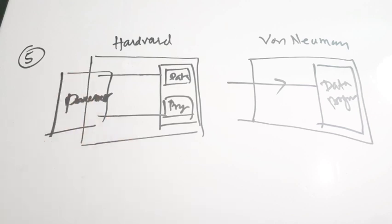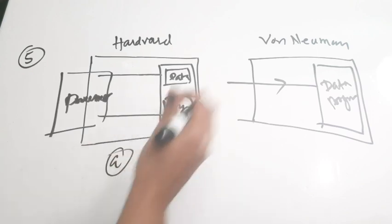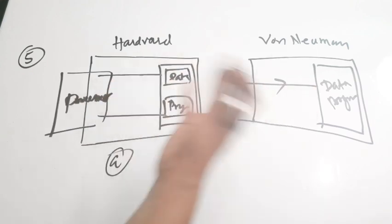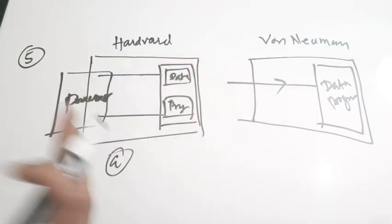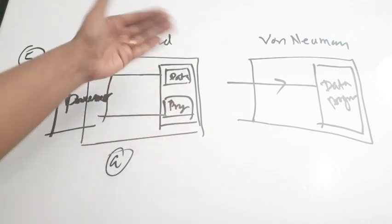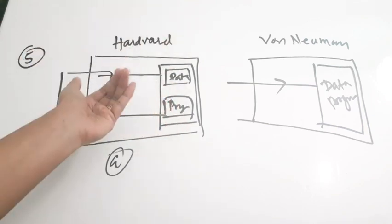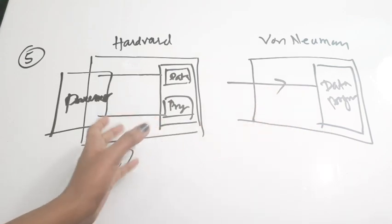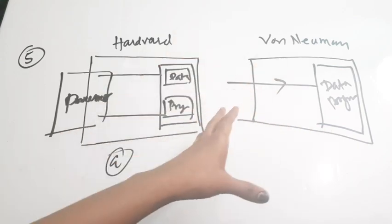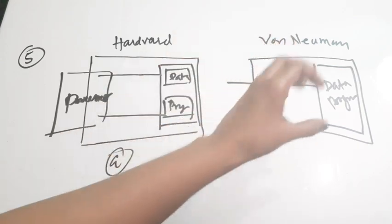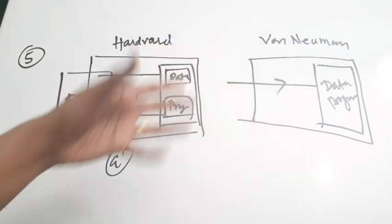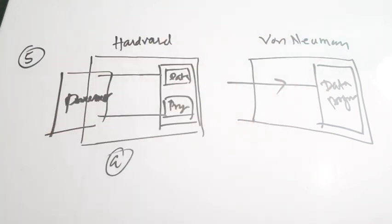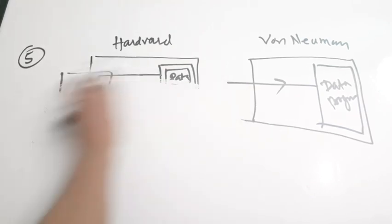The correct answer for the fifth question is A. The main difference is that Harvard architecture has a partition separating data memory and program memory, whereas Von Neumann, which is a more primitive architecture, stores both program and data in a single space.